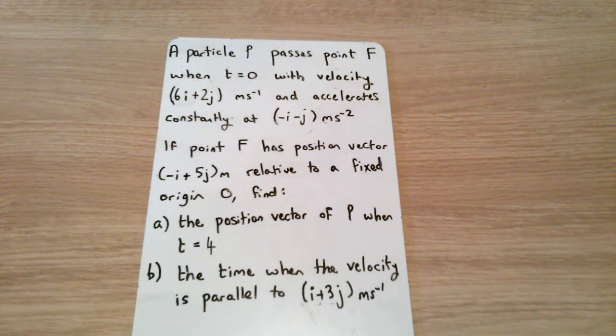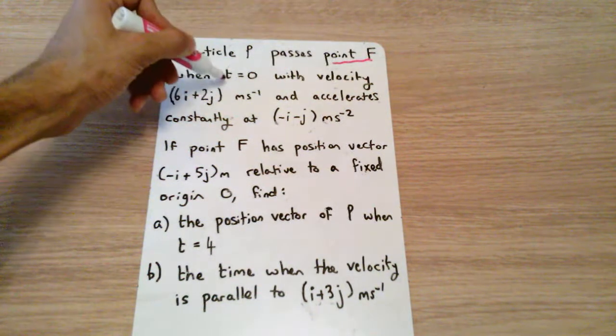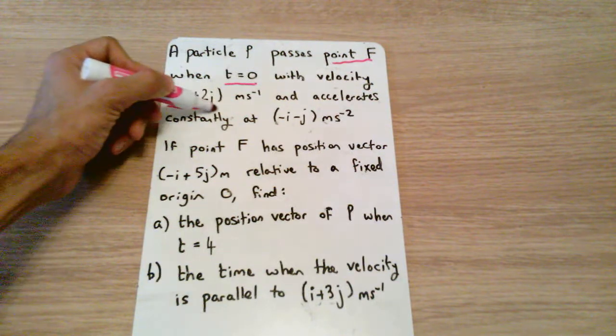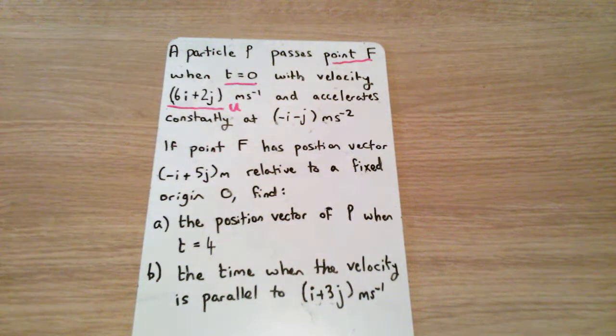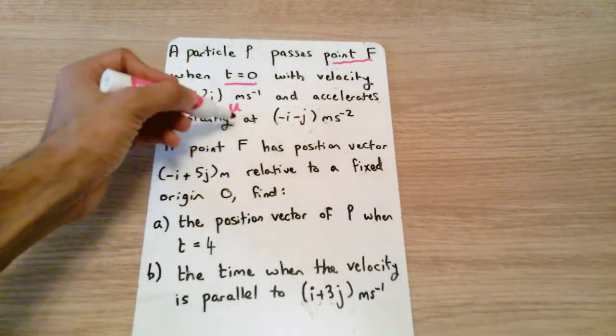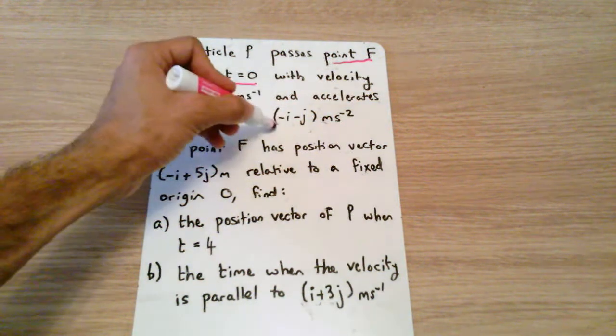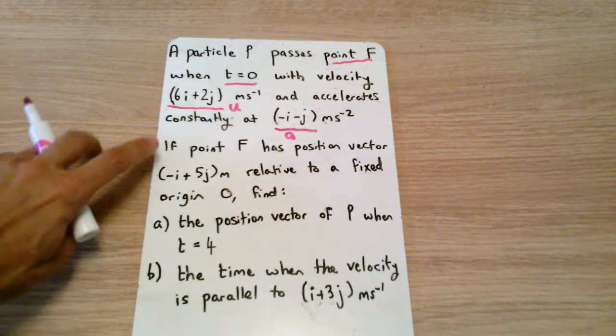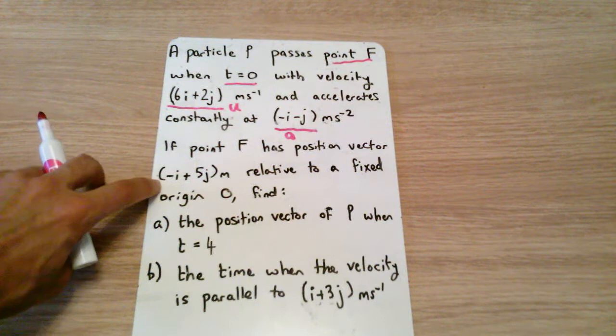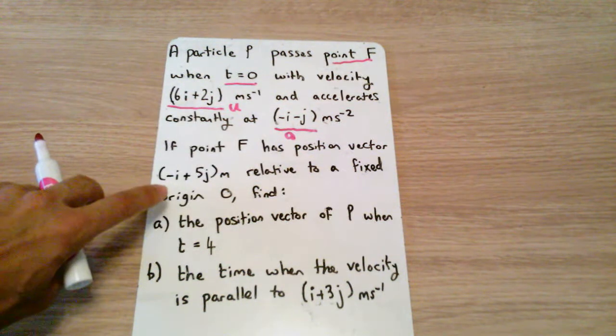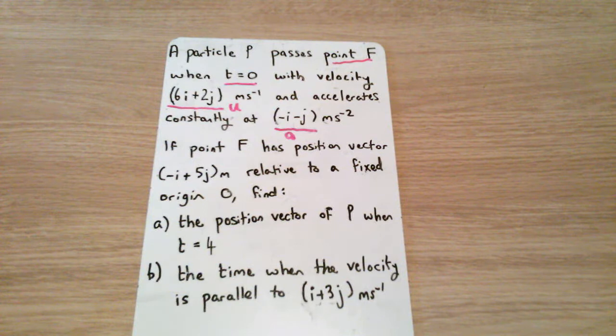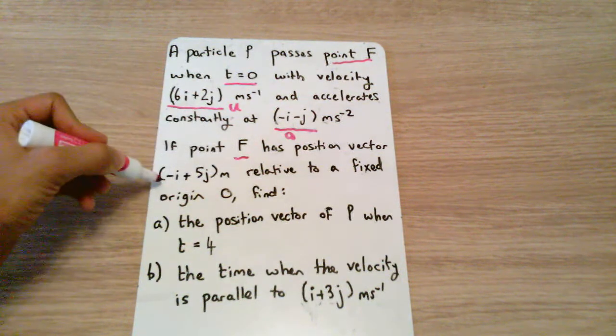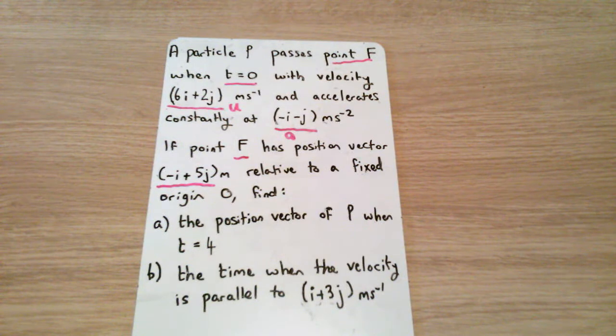Which funny enough is the position for this particle in this example here. We have here a particle P passing through point F when t is zero, and it has velocity 6i plus 2j. Now if that's the velocity when t is equal to zero, that would be our initial velocity, and it accelerates constantly at minus i and minus j. If point F has position vector minus i plus 5j relative to the fixed origin, find the position vector of P when t is equal to 4.